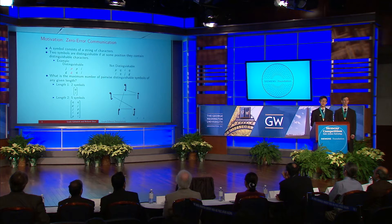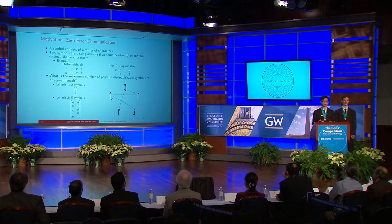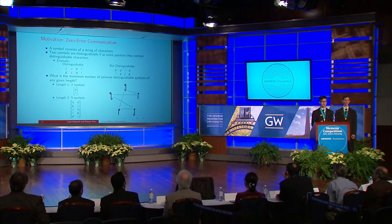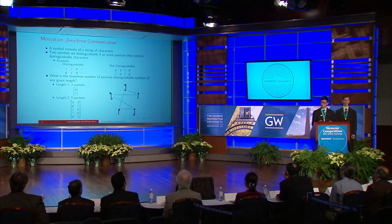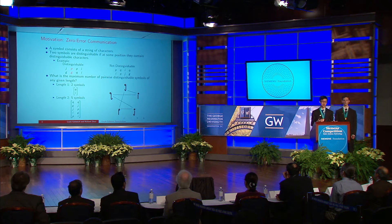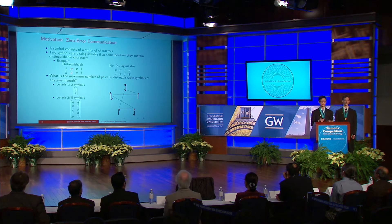On the other hand, the two symbols shown on the right-hand side of the screen are not distinguishable, because at no position do they contain distinguishable characters. So the question then becomes: what is the maximum number of pairwise distinguishable symbols of any given length? For instance, if we consider symbols of length one, we can have at most two symbols such that any two are distinguishable. On the other hand, if we allow for symbols of length two, we can have up to five symbols.